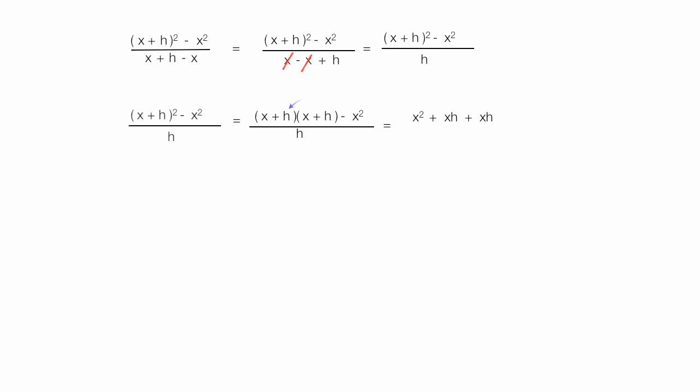And finally, h times h, which is h squared, minus x squared, all divided by h.